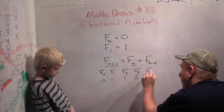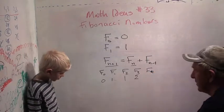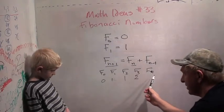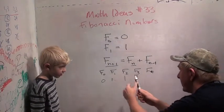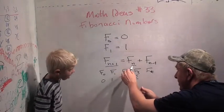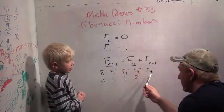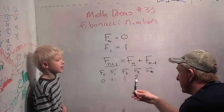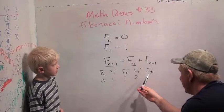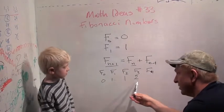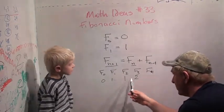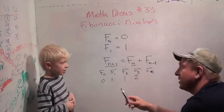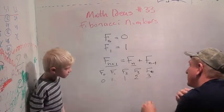Can you tell me what F four is supposed to equal? Four. F four equals? Three. F four equals F three plus F two. I guess seven. Yep. F four equals F three plus F two. F three is two. F two is one. So, the fourth Fibonacci number is two plus one, which is? Three. Three.